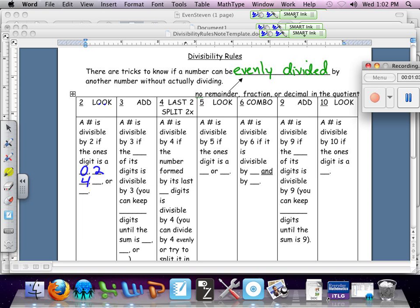It could be 0, it could be 2, 4, 6, or 8. Who do we appreciate? So if it's divisible by 2, you don't need to show any work. You just look at the end number, number in the ones place.